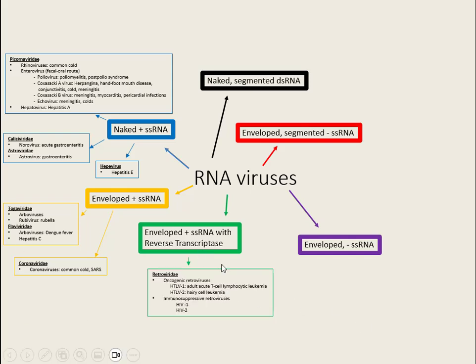What that means is that these viruses are able to do reverse transcription. Normal transcription is taking double-stranded DNA and making single-stranded messenger RNA. But these viruses can take a single strand of RNA and reverse it, turning it into double-stranded DNA. The group is called Retroviridae because the word 'retro' means to go back or backwards — they do transcription in reverse.